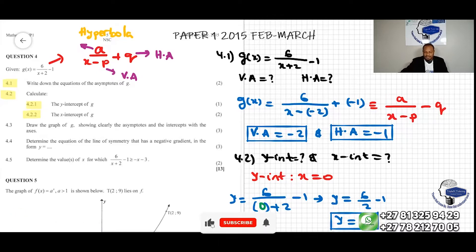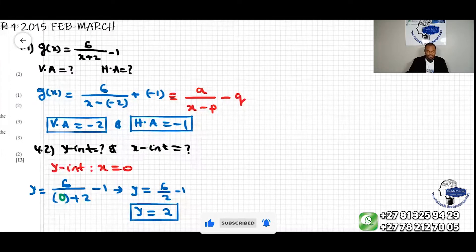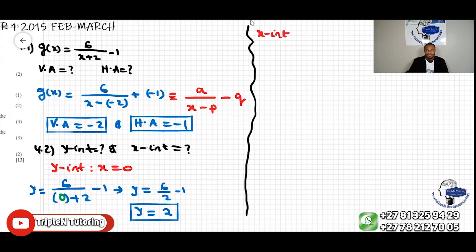Now for the x-intercept, similar way, I just want to break some more over here. X-intercept means what? X-intercept means we make y equal to zero.